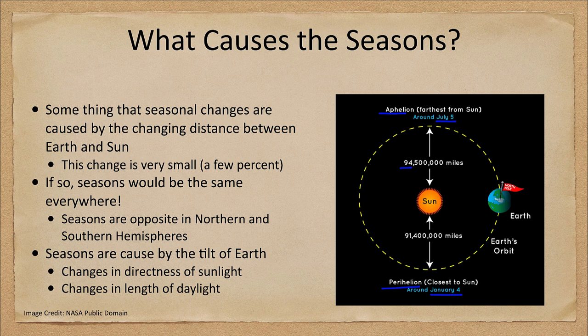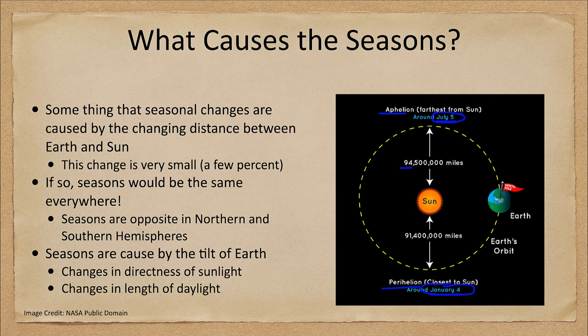You may also notice one thing that would be wrong here: we are farthest from the Sun in July and closest in January. For those in the northern hemisphere, these are completely opposite to when we get the seasons. Also, if we think about this through the scientific method, it would make a prediction that the seasons would be the same everywhere. But we know that seasons are opposite in the northern and southern hemispheres.